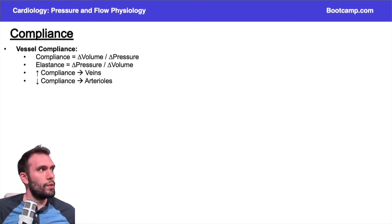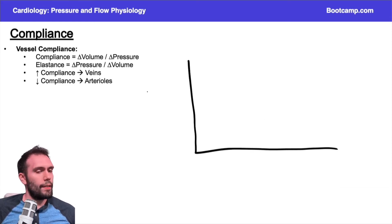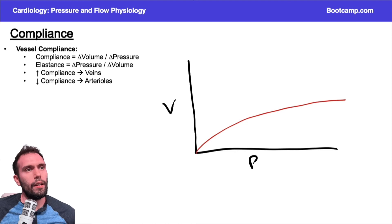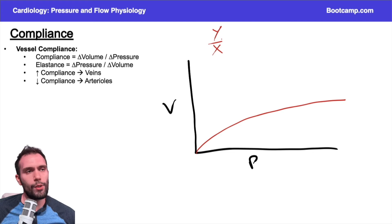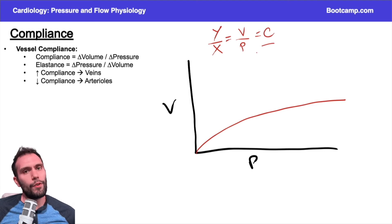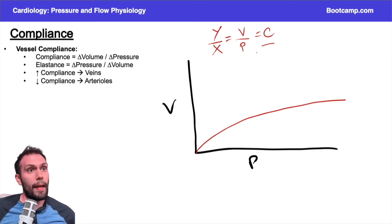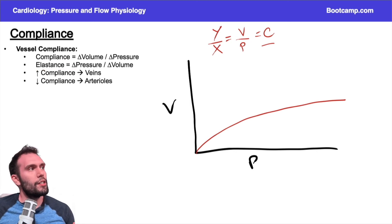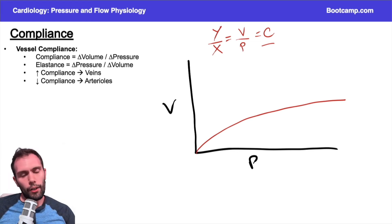Now, let's make a graph with pressure on one axis and volume on the other. Going back to basic algebra, the slope of this is y over x, rise over run, which really is just volume over pressure, which is equal to the compliance. So this graph's slope is essentially the compliance. If I have a higher slope, I'm going to have a higher compliance. The reverse of that is the elasticity. Elasticity will come into play more when we talk about the respiratory system, where compliance is our ability to change lung volumes in response to certain pressures, and elasticity is the elastic recoil, which is inversely proportional to the compliance.